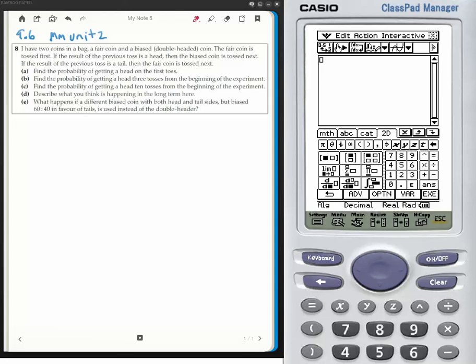This is for Year 11 Methods, question number 8 out of 9.6. It's to do with conditional probability. I have two coins in a bag, a fair coin and a biased coin.